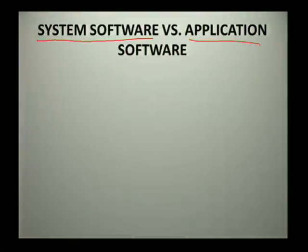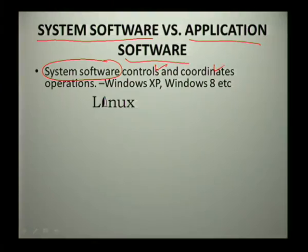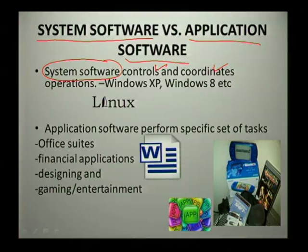Now for the different types of software. It's very important to understand that we have system software as well as application software — these two are our basic software types but they differ in terms of functionality. System software is the one that comes with your calculator, paint, and snipping tool. It controls and coordinates operations in your computer. Examples include Windows XP, Windows 7, Windows 8, and Linux, which is normally a free operating system.